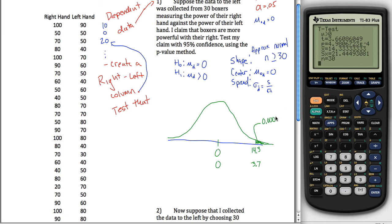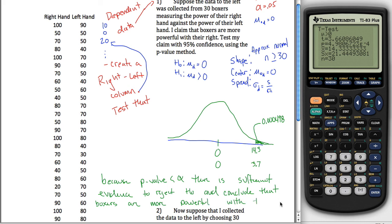And then four, nine, eight. Maybe I should have just called that five. Can't say five and write eight. So there's my p-value, this really, really small number. And so for my conclusion, I'd just say because my p-value is less than alpha, p-value is tiny, alpha is 0.05. There is sufficient evidence to reject my null hypothesis and conclude kind of whatever the claim was. In this case, my claim was that boxers were more powerful with their right. And conclude that boxers are more powerful with their right. Good enough.